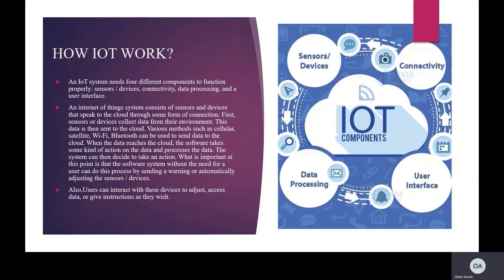I would like to mention how IoT works and some advantages. An IoT system needs four different components to function properly: sensors or devices, connectivity, data processing, and the user interface. An IoT system consists of sensors and devices that speak to the cloud through some form of connection. First, sensors or devices collect data from their environment, and this data is then sent to the cloud.